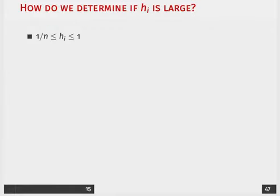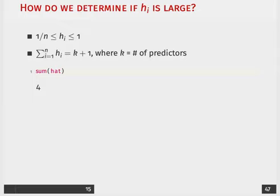What's really consequential here is how do we determine if an observation is potentially committing undue influence on our estimates. Hat values are always going to be bounded between 1/n and 1. Importantly, when we sum up our hat values, this equals the number of predictors plus one. In our example, if we did sum of hat, we'd get four. Why? Because we had three predictors.